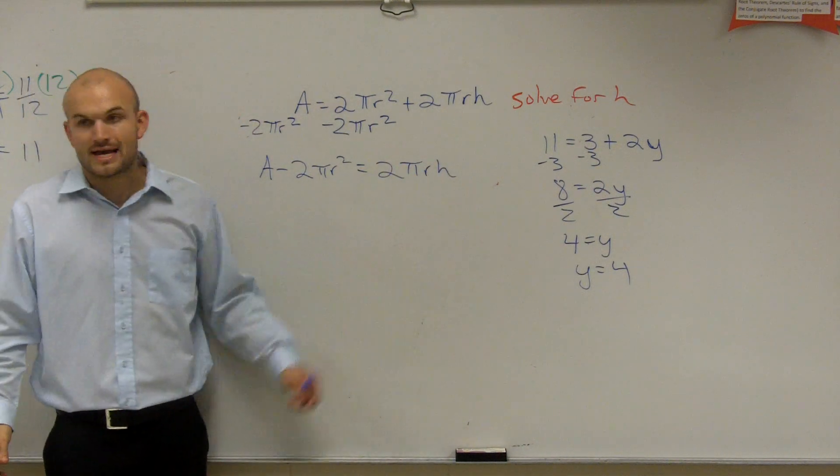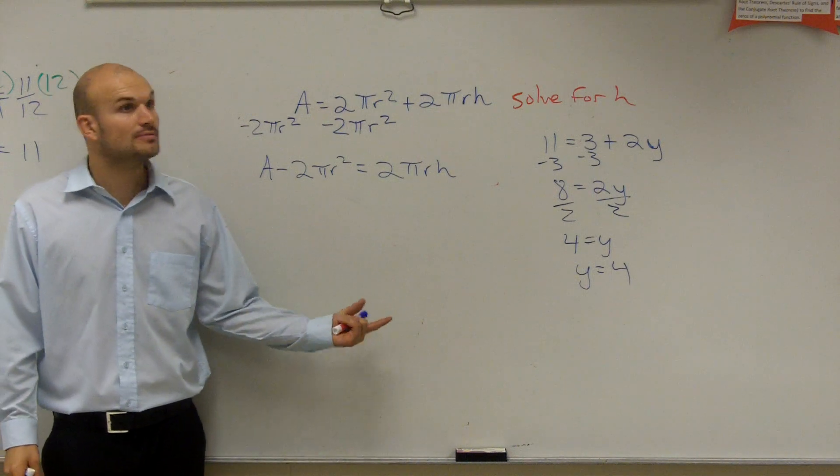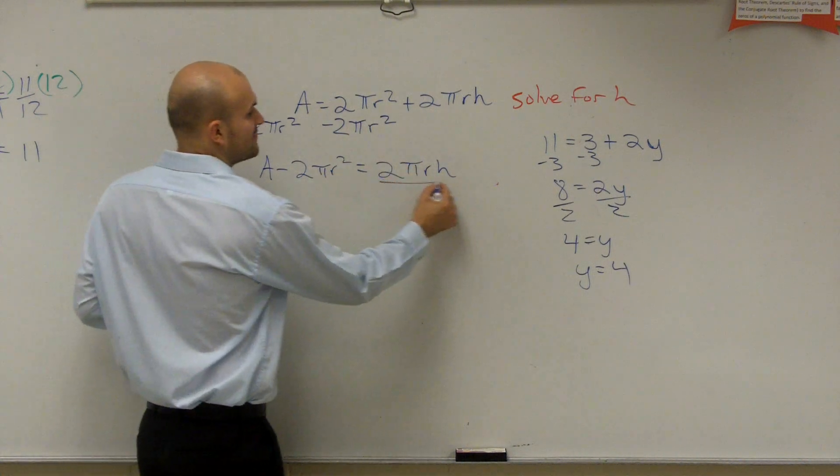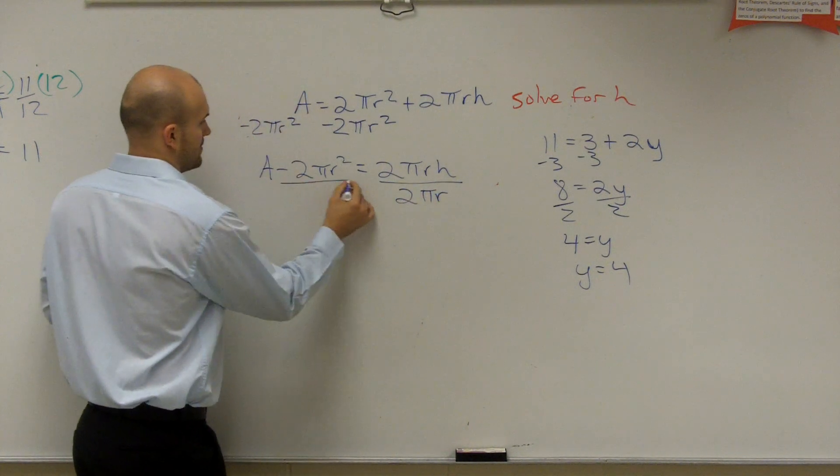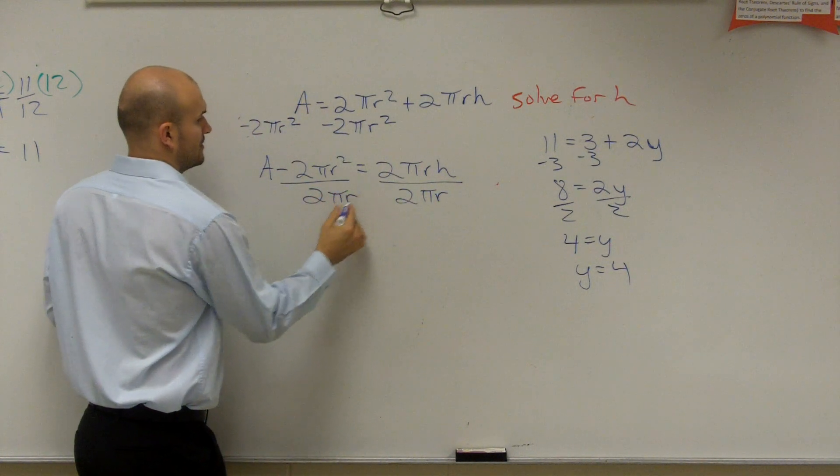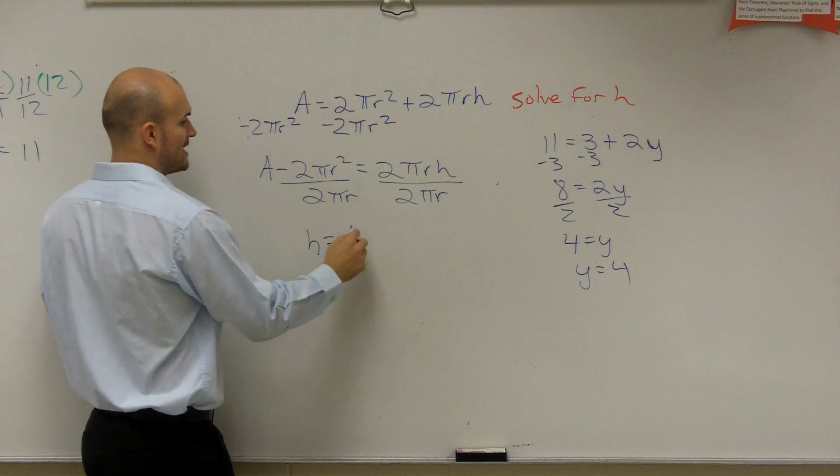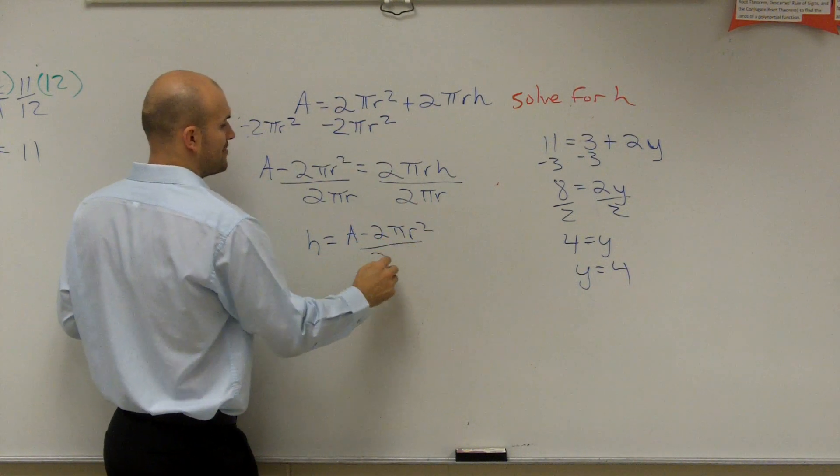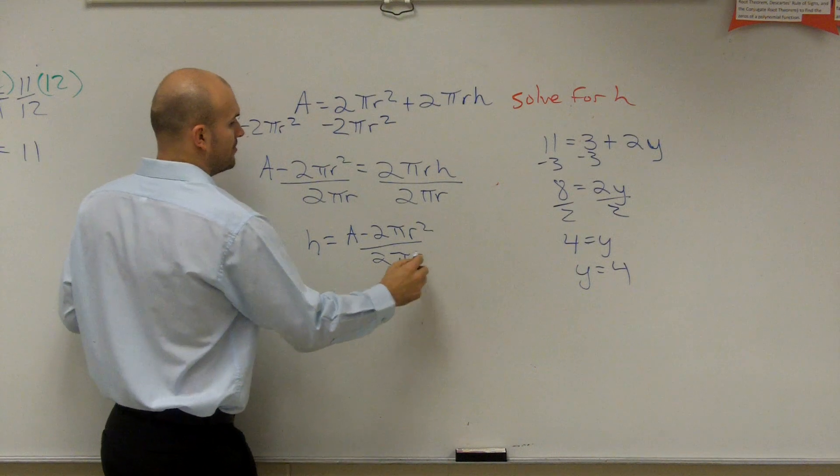Now we say what's happening to our variable. It's being multiplied, right? It's being multiplied by 2 pi r. So we're going to divide by 2 pi r. So therefore, I have h equals A minus 2 pi r squared divided by 2 pi r.